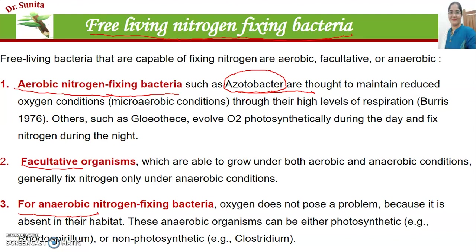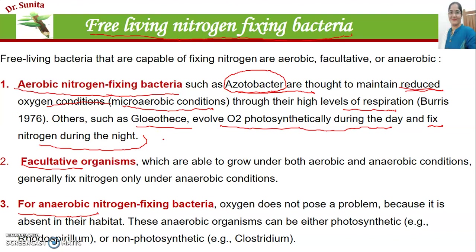The micro-aerobic condition is created due to the high level of respiration. The second type is facultative organisms, which are able to grow in both aerobic and anaerobic conditions, but nitrogen fixation occurs only during anaerobic conditions. The third type is anaerobic nitrogen-fixing bacteria, where oxygen is absent in their habitat. These anaerobic bacteria may be photosynthetic, such as Rhodospirillum, or non-photosynthetic, such as Clostridium.